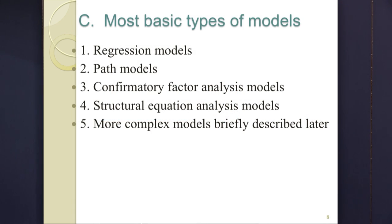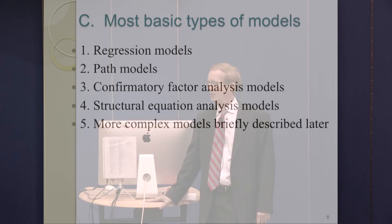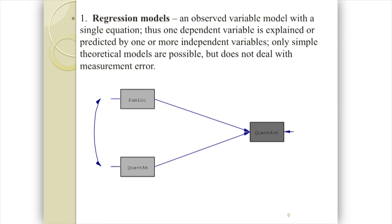Here's a quick run-through of the four basic models in SEM, and then a little bit on advanced models. The diagrams are from the LISREL software. In standard nomenclature for path diagrams, squares or boxes signify observed variables, and circles or ellipses signify latent variables.